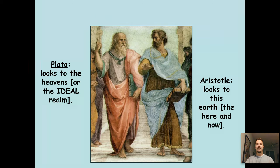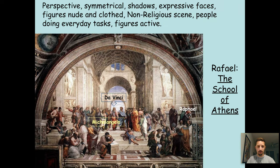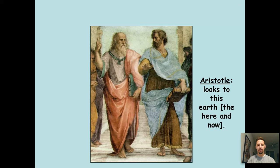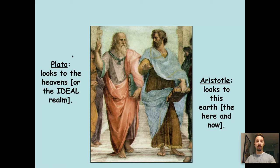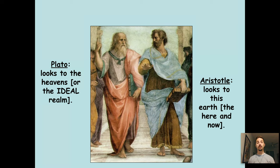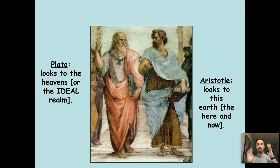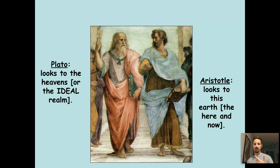If we zoom in — so these two figures are right here. We have Plato on the left and Aristotle on the right; they were two classical Greek philosophers. Plato is looking up to the heavens, or the ideal realm — the idea that we want to get all our thought from religion. And then we have Aristotle who looks down to this earth, the here, the now, the what's going on around us — the humanist side.